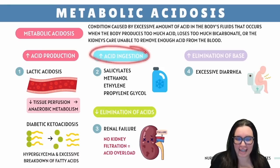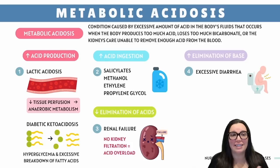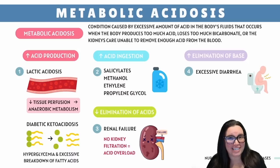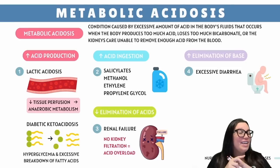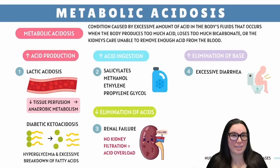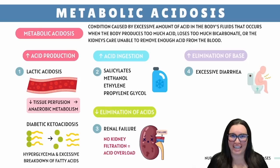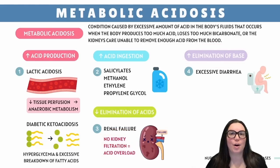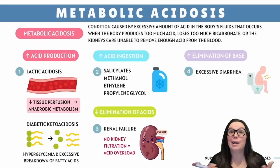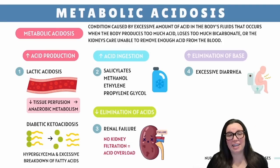For number two, we have too much acid consumption — think chugging methanol, salicylates (aspirin overdoses), or antifreeze known as ethylene glycol. Don't drink weird things, y'all. For number three, the kidneys go on strike and we see a decrease in acid elimination. If your kidneys quit their job — also known as renal failure — acid builds up faster than your student loan debt. And lastly, for number four, we have increased elimination of our base. Bicarbonate loss equals diarrhea disaster — too much diarrhea means bye-bye bicarbonate, hello acid. Think of bicarbonate as your body's Tums; if you lose too much, your pH is going to drop.